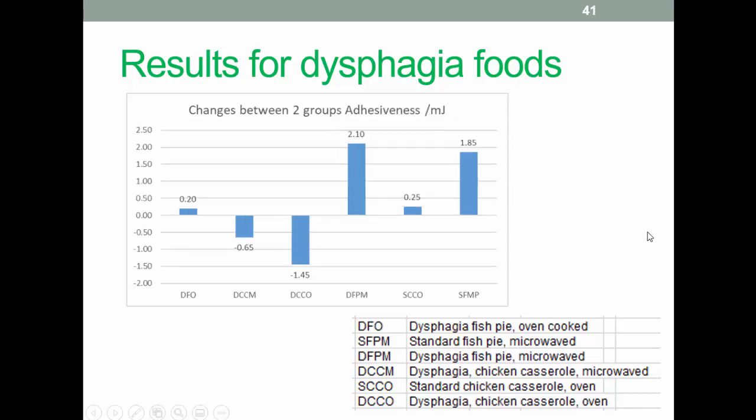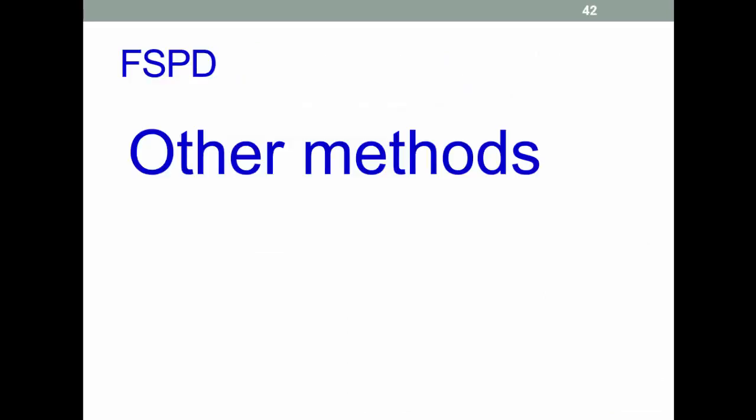And again, this is for adhesiveness. And we'll notice a similar pattern here. A lot of variability in these results suggests the need for more work in this area, and it's something we want to look at in the future. Okay, so other methods. For completeness, the relevant group of the OBR should note that these topics are not included in the open book resource.